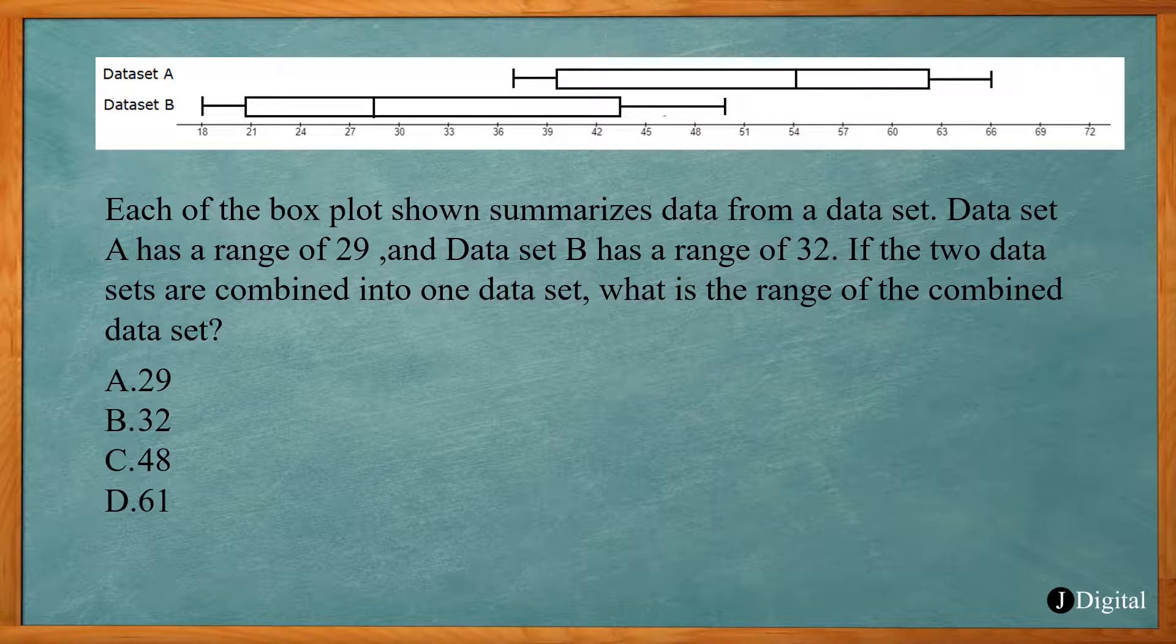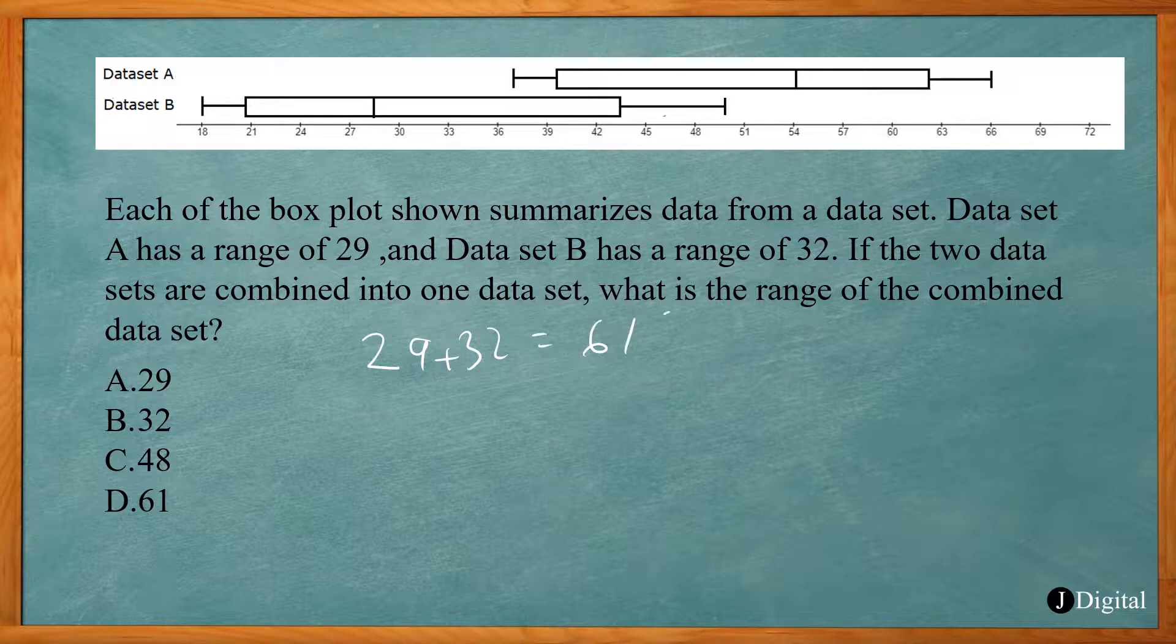So don't be quick to just say 29 plus 32 because that would be wrong because some of this data overlaps each other. So the range is not 61.